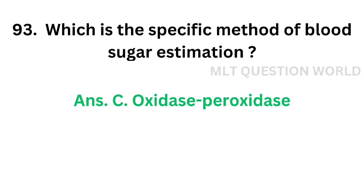The correct answer is Option C, Oxidase-Peroxidase. Oxidase-Peroxidase method is the specific method for blood sugar estimation.